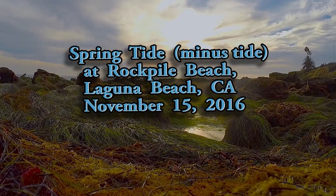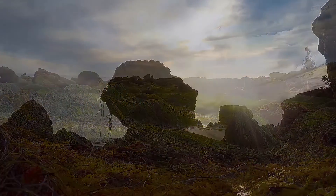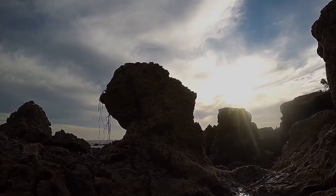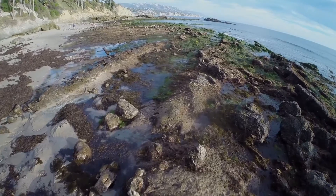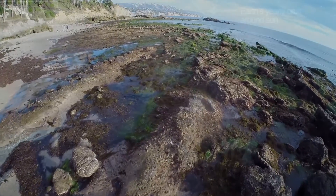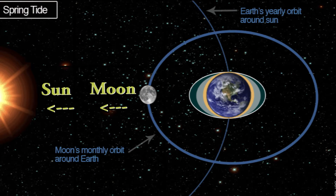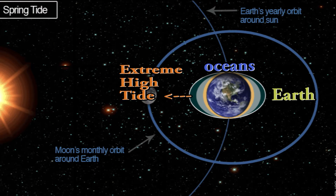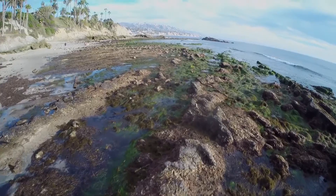Spring tide or minus tide at Rockpile Beach. A spring tide occurs when the sun and the moon line up their gravitational pull on the earth, creating a bulge in the oceans. Where the combined pull is strongest, there are extreme high tides, or spring tides, and where it is the least, there is an extreme low or minus tide.